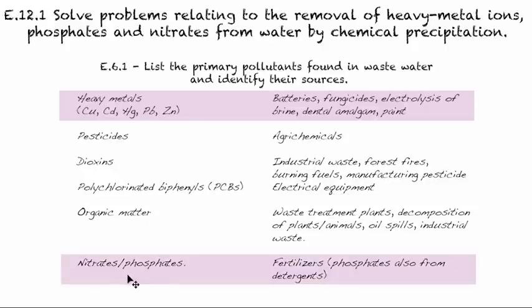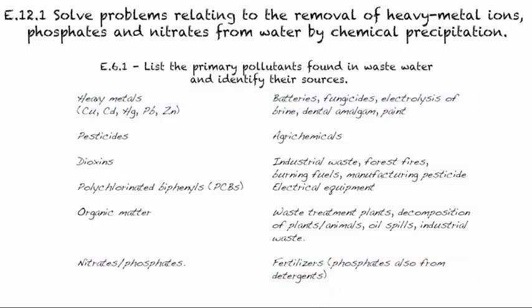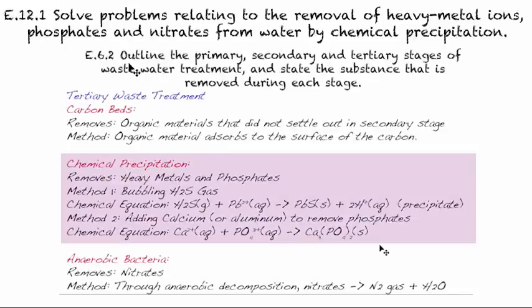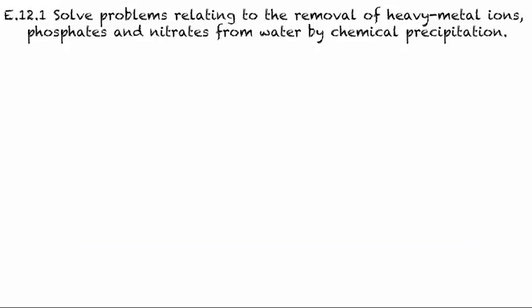In terms of the nitrates and phosphates, we can remember that they come from fertilizers, and phosphates can also come from detergents. There's also a second connection in the tertiary waste treatment. When we were looking at that in E.6.2, the last step included a chemical precipitation — removing heavy metals using different methods, one case adding hydrogen sulfide and the other adding calcium. We're going to try to make connections to understand how that works mathematically with a solubility constant and connecting that with equilibrium.